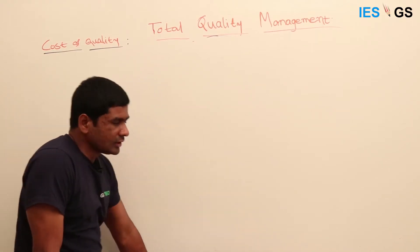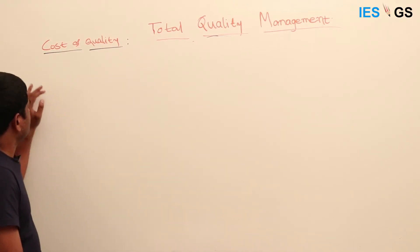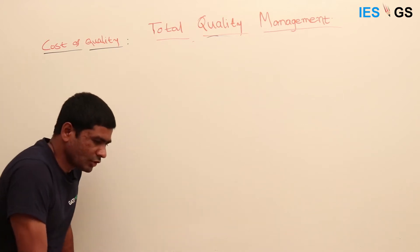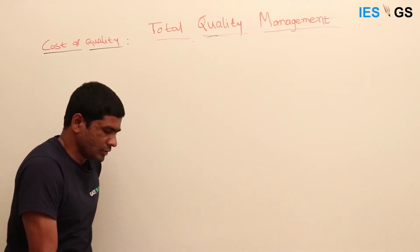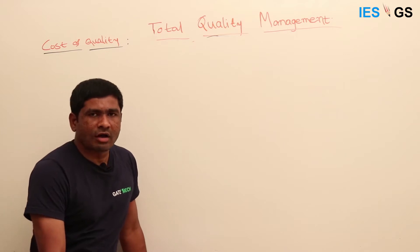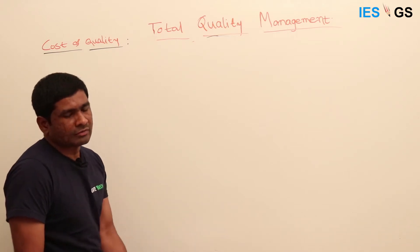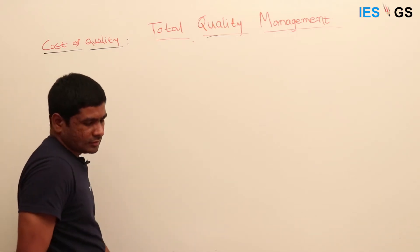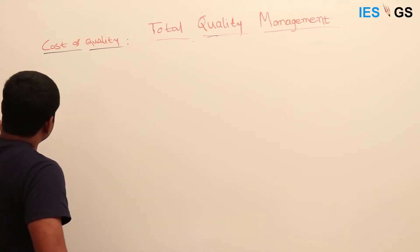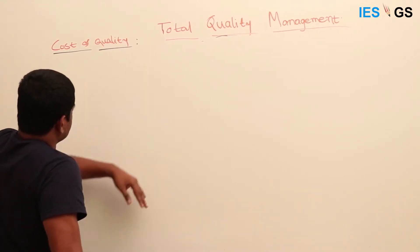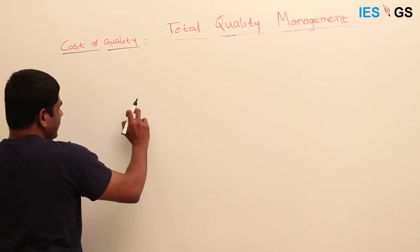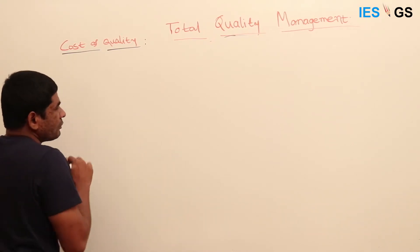The next important topic is the cost of quality. What is the meaning of cost of quality? If we are not maintaining the quality, what is the cost for that? How much price are we paying for that? Generally, there are two types of costs, two reasons to incur this type of cost.